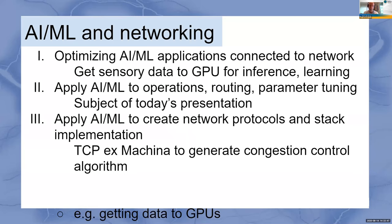The first use case came up in the previous talk indirectly. How do we optimize AI machine learning applications that are connected to the network? What can we do in the networking stack, networking protocols, and networking layer, specific to the needs of AI and machine learning? AI machine learning is all about getting large data sets and running simple computation over those for learning or inference — but we also have to move this data, and that's where the networking part comes in. For instance, we need to explore how to get data to GPUs, which are processing large data sets, as opposed to just throwing everything to the CPU as we've done in the past.